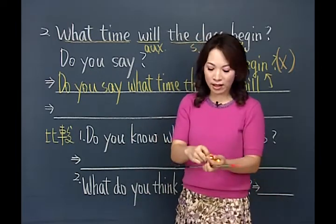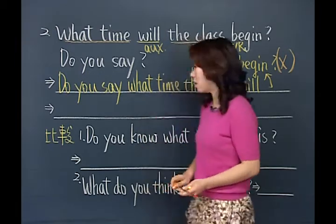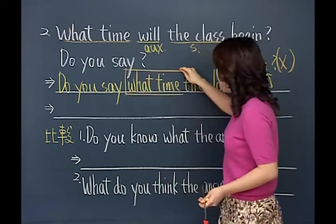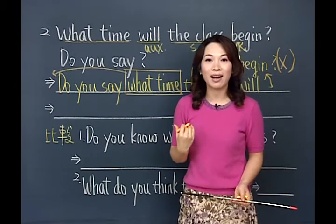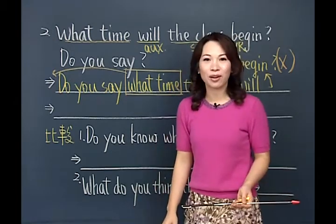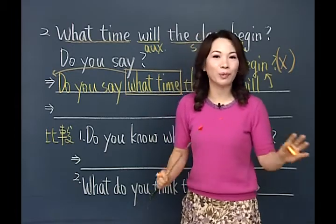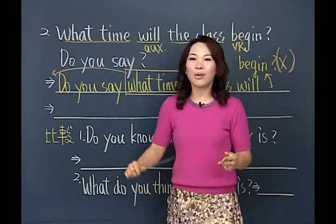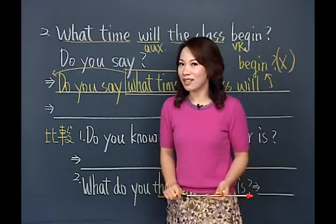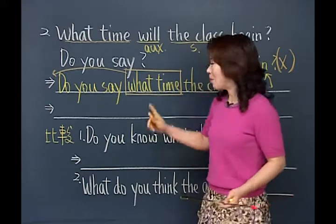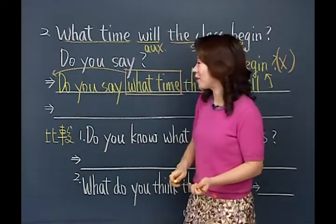既然不需要回答Yes/No，你怎么可以用助动词开头呢？我们要问的是时间，所以多一个步骤，把what time这个疑问词给他拿到句首去，这样要得到的答案才是我们要的。没有人在问「你说这堂课几点开始」——「是啊我说」，不对。你认为这堂课几点开始——是啊我认为，都不对。要把what time拿到前面。